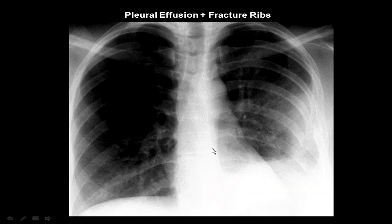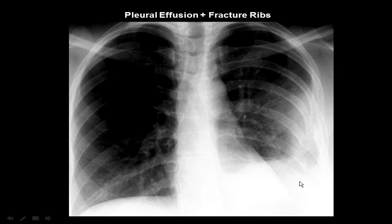This chest X-ray posterior-anterior view shows multiple fractured ribs at multiple sites. We have to also detect any bone abnormality on the chest X-ray — we have the ribs, the scapula, the clavicles, and the vertebrae. Here are the multiple fractured ribs with obliteration of the left costophrenic angle, with rising fluid towards the axilla. It's fractured ribs with pleural effusion.